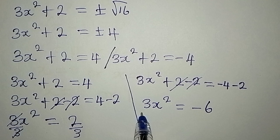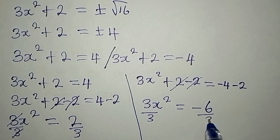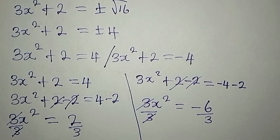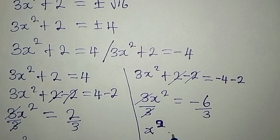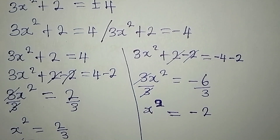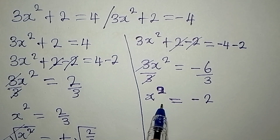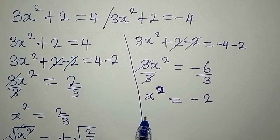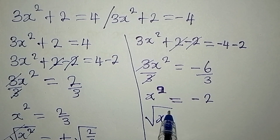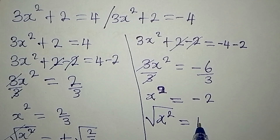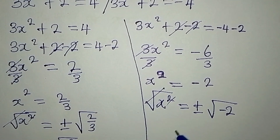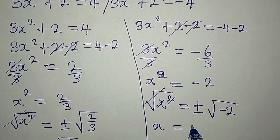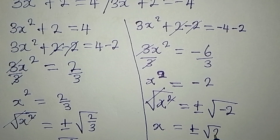We divide both sides by 3 — the 3s cancel — so x squared equals negative 6 over 3, which is negative 2. To remove the square, we take the square root of both sides, giving us x equals plus or minus square root of negative 2.